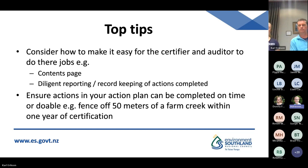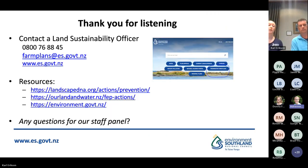Some top tips: consider how to make it easy for the certifier and auditor to do their jobs — for example, have a contents page on your farm plan, do diligent reporting and record keeping of actions completed, and keep evidence of when these actions are completed. Ensure your actions can be completed on time and are doable — for example, fencing off 50 metres of a farm creek within one year of certification. Resources, contact details, an email address and website are listed for your Land Sustainability Officer.